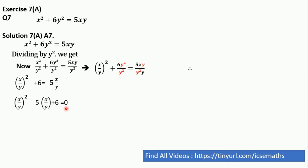Now, to make it simplify, let's consider x by y is a. And that is equation number 1. So if we put x by y is equal to a, then this will become a square minus 5a plus 6 is equal to 0.